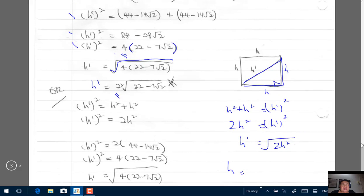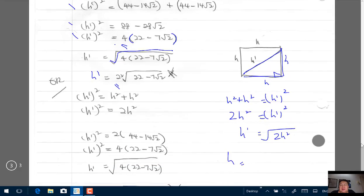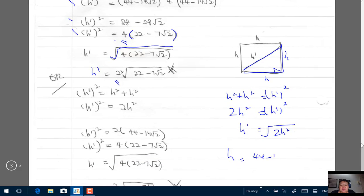The side is 44 minus 14 root 2. That's h.